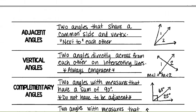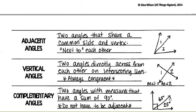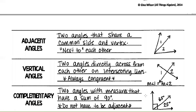Complementary angles: two angles with measures that have a sum of 90 degrees — they do not have to be adjacent. Complementary means the two angles add up to 90 degrees, so 65 plus 25 equals 90 degrees.